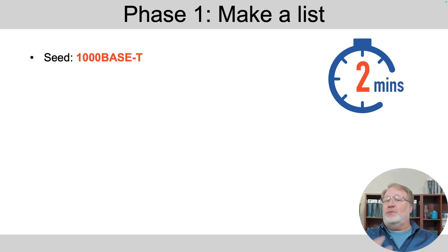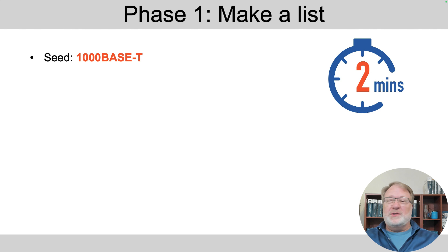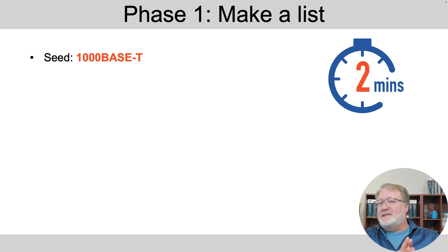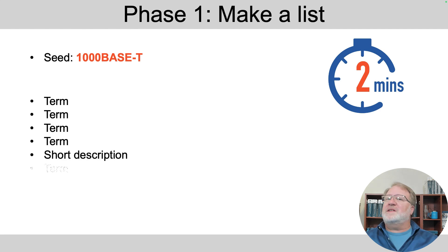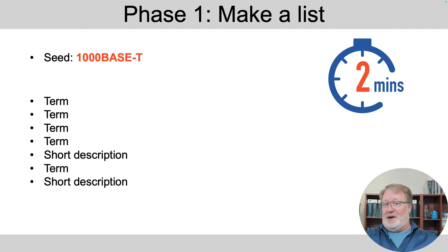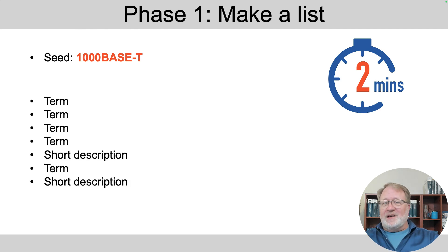Let me walk through the three phases with you. We'll use a seed term of 1000 Base T in this case, so make yourself a list of whatever terms and concepts come to mind using that seed term. You've got five seconds to hit pause so you can go off and do the activity.